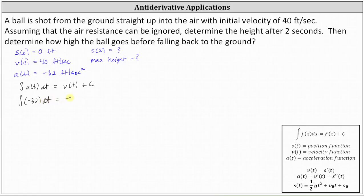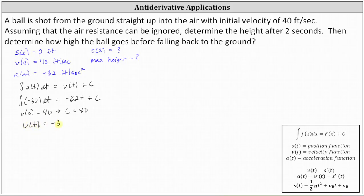Integrating, we have negative 32t plus c for the velocity function. But we know the initial velocity v of zero equals 40, so when t equals zero the velocity function must equal 40, which indicates that c is equal to 40. So now we know the velocity function equals negative 32t plus 40.